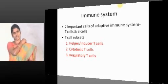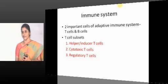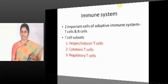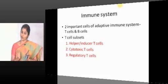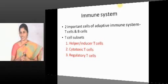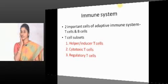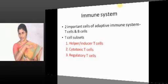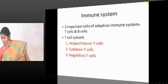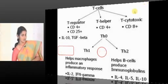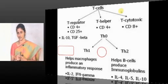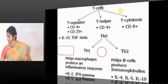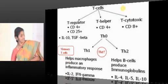Coming to adaptive immunity, which is the most dominating part of the immune system, it is dominated by T and B lymphocytes. B lymphocytes are simpler in function. But T lymphocytes are much more complex and they really dominate the immune system. T cell subsets include helper T cells, cytotoxic T cells, and regulatory T cells. Coming to the subsets of helper T cells — one of the high-end areas of immunity — it is TH1, TH2, and TH17, which was added at least a decade ago.